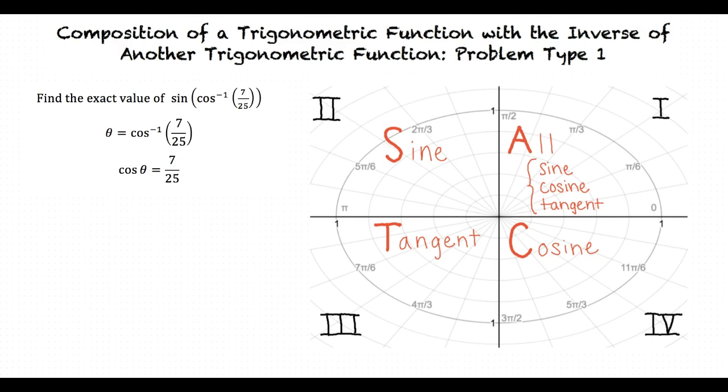For instance, in the third quadrant, tangent is positive while cosine and sine are negative. What does All mean? All means that sine, cosine, and tangent all are positive in the first quadrant.